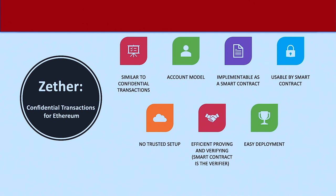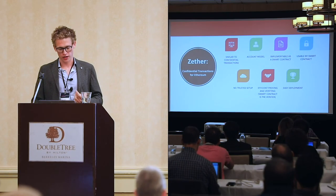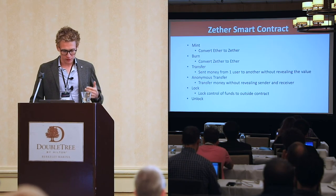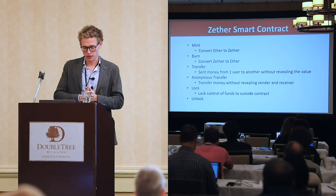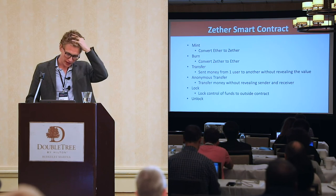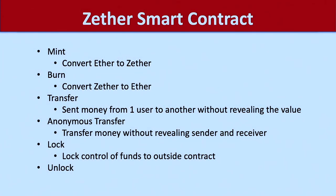So we developed Zether, which at a simple level provides confidential transactions for Ethereum and also some more things. The nice thing is that it's simply a smart contract deployable on top of Ethereum, and the techniques apply to generally account-based systems. It doesn't have a trusted setup, and we made a lot of changes to make it very efficient. The basic functionalities are: convert Ether to Zether by calling a function in the smart contract, burn it back, and transfer money between users.